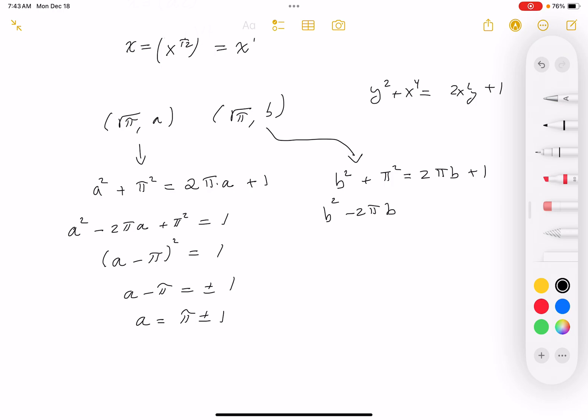I get minus 2πb plus π² equals 1. It's a perfect square so it's (b - π)² equals 1, so b - π equals plus or minus 1, so b equals π plus or minus 1.